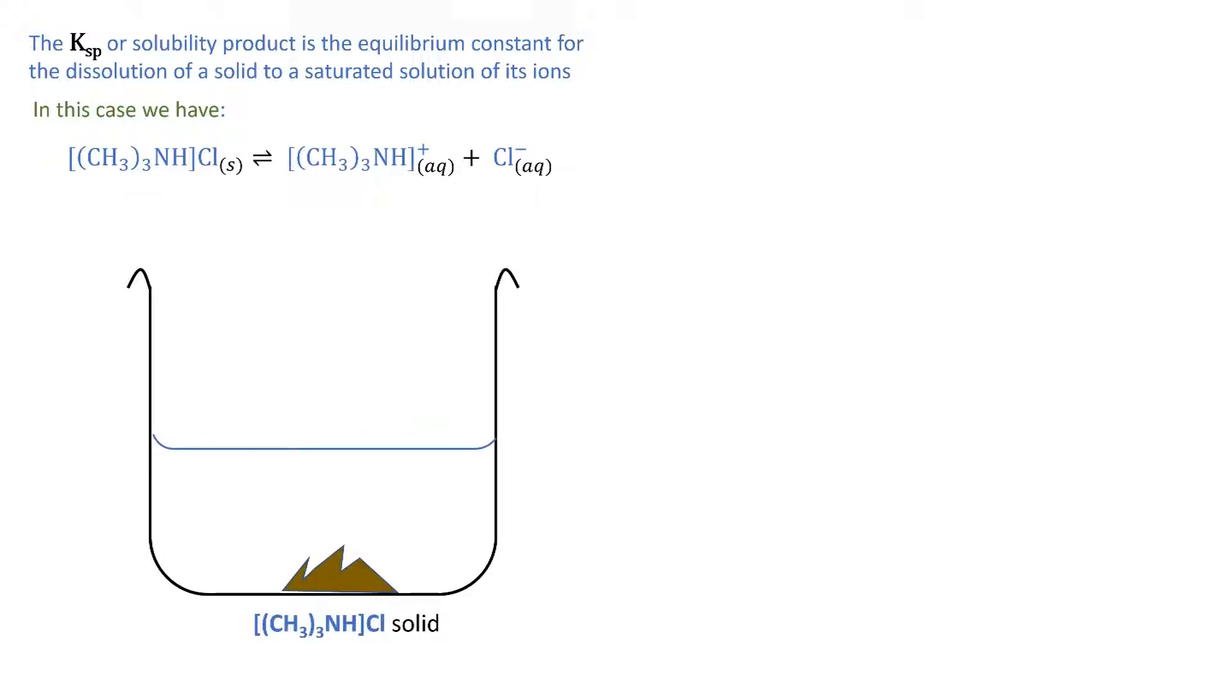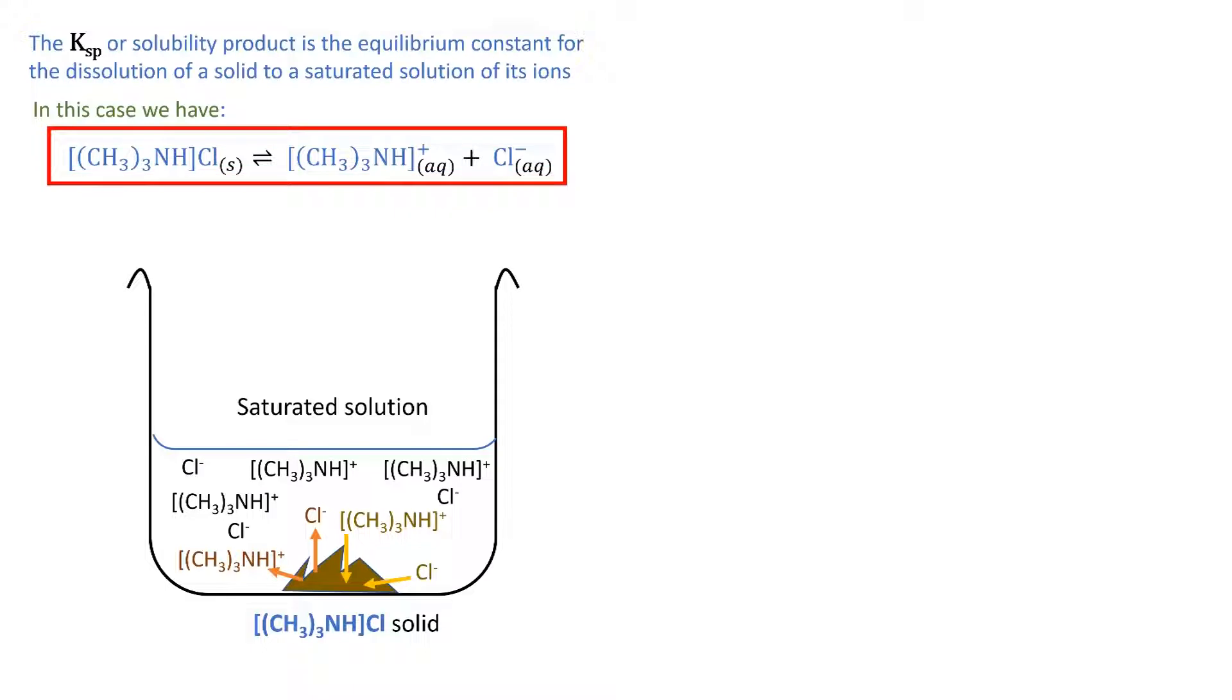We have, for example, a beaker of water, and the solid is placed within it. This is a saturated solution. That would mean the solution would have the maximum amount of trimethylammonium and chloride ions that the water could handle. At equilibrium, the rate at which the ions are going from the solid to the aqueous state would be equal to the rate at which the ions are being deposited again from the aqueous state back to a solid. This is what we are expressing with this reversible reaction equation, assuming it is at equilibrium.